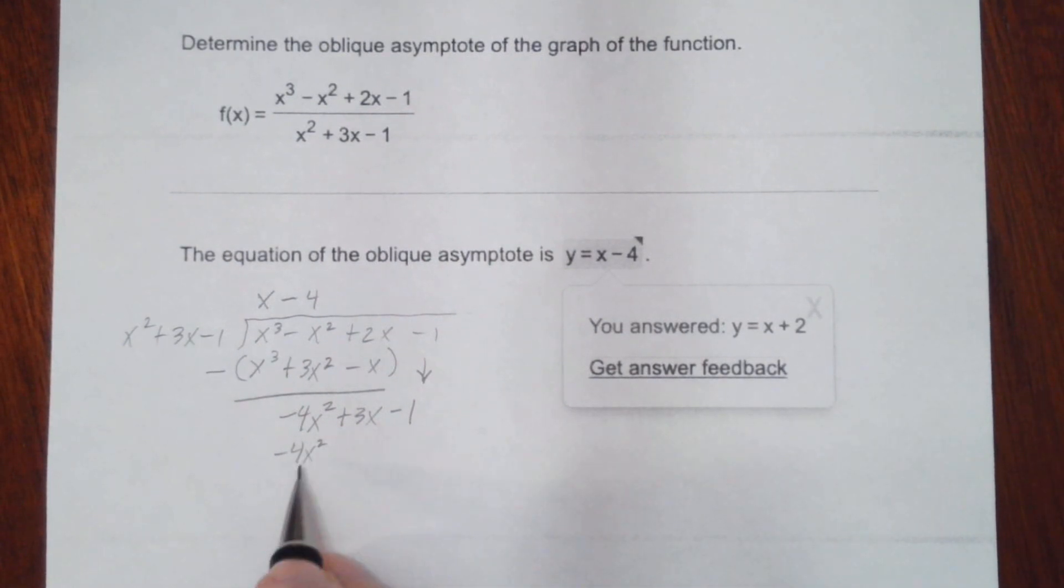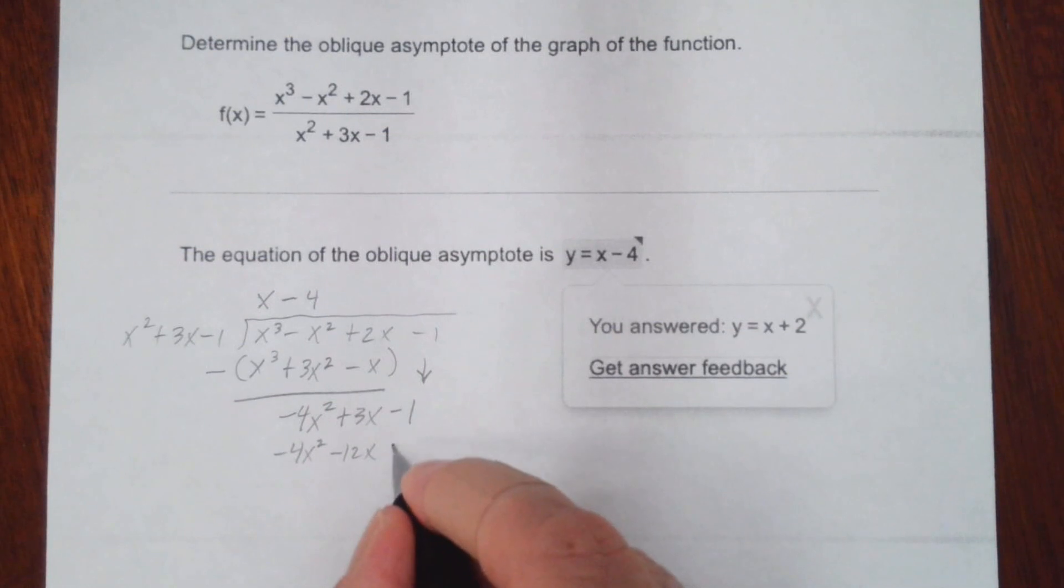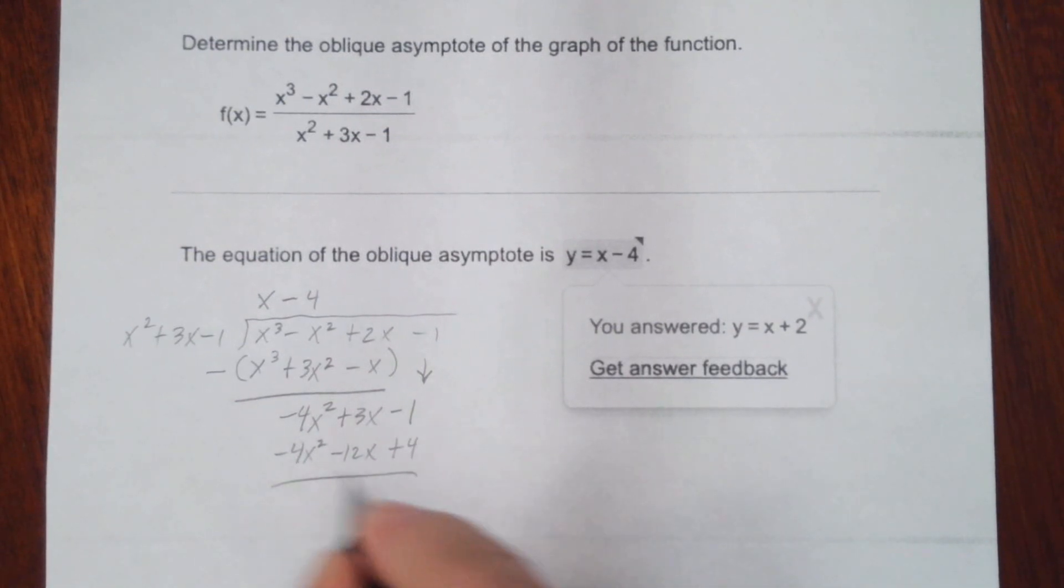Again, these should always match because of the way we're selecting our numbers here. Negative 4 times 3x, that'll be minus 12x. And negative 4 times negative 1, we'll get plus 4.